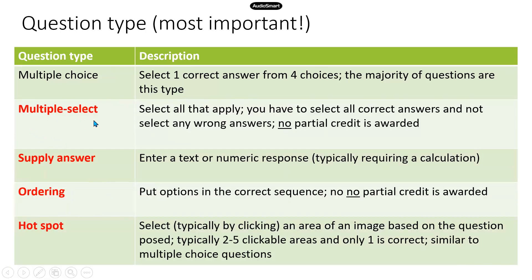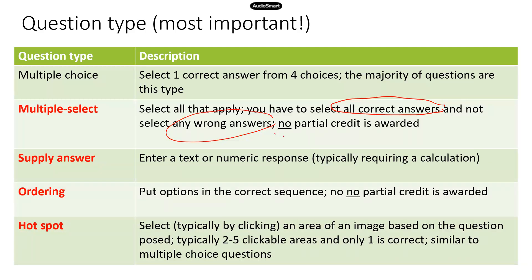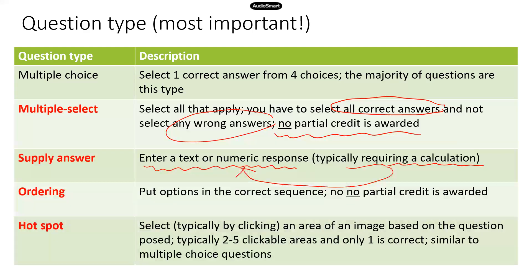You're going to get multiple select, which is probably the most difficult type of question, because you have to select all the correct answers and not any of the wrong answers. If you select two correct answers and one wrong answer, you get zero — they do not provide any partial credit. Supply answer is the second most difficult type of question because you have to enter a text or numeric response, kind of like a fill-in-the-blank. According to the study manual, this question typically requires a calculation, which corresponds with a numeric response, but since their website also mentions text response, I've included both so we're fully prepared.